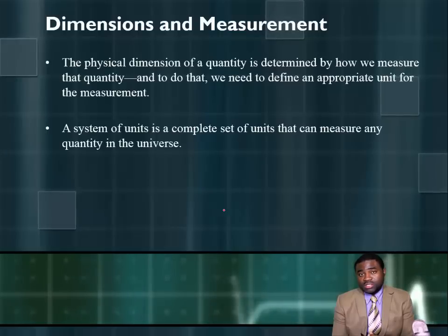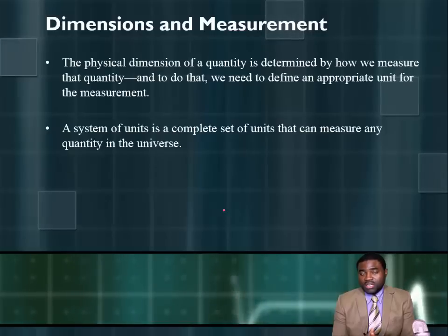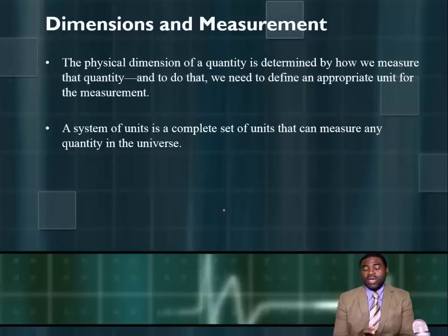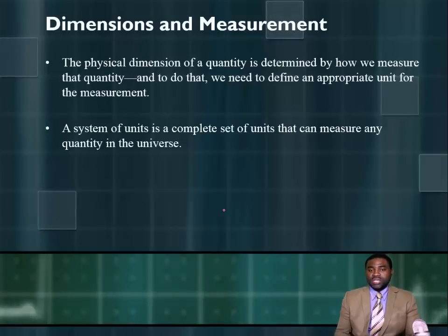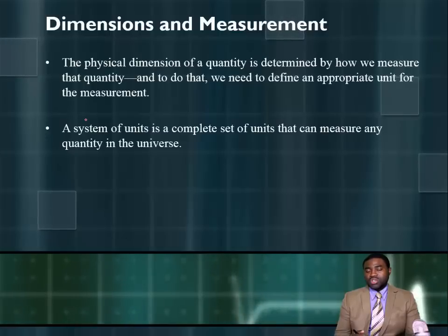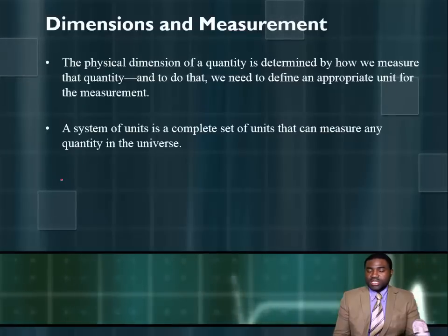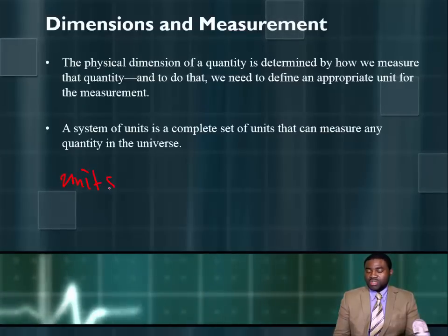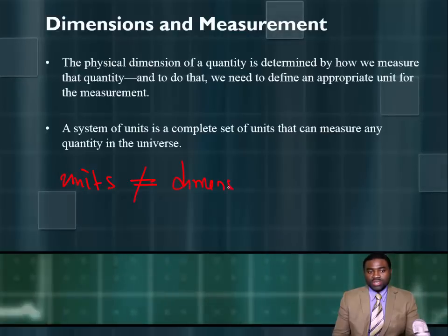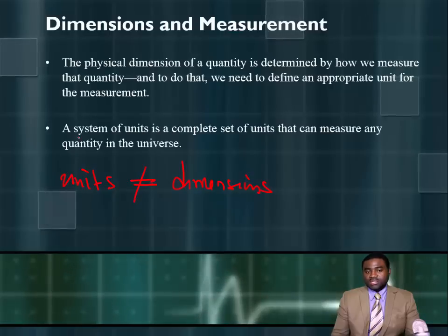The physical dimensions of a given physical quantity is determined by how that given physical quantity is measured. To measure, we need to choose or define an appropriate unit of measurement. In other words, dimensions imply units — but units is not the same thing as dimensions.